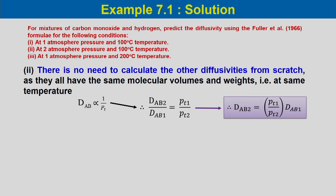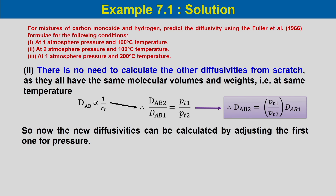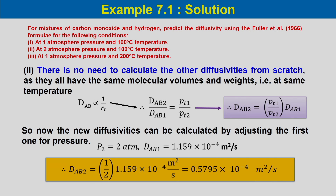Therefore D_AB2 = (P_T1/P_T2) × D_AB1. With P_T2 = 2 atm and D_AB1 = 1.159 × 10^(-4) m²/s, substituting gives D_AB2 = 0.5 × 1.159 × 10^(-4) = 0.5795 × 10^(-4) m²/s.